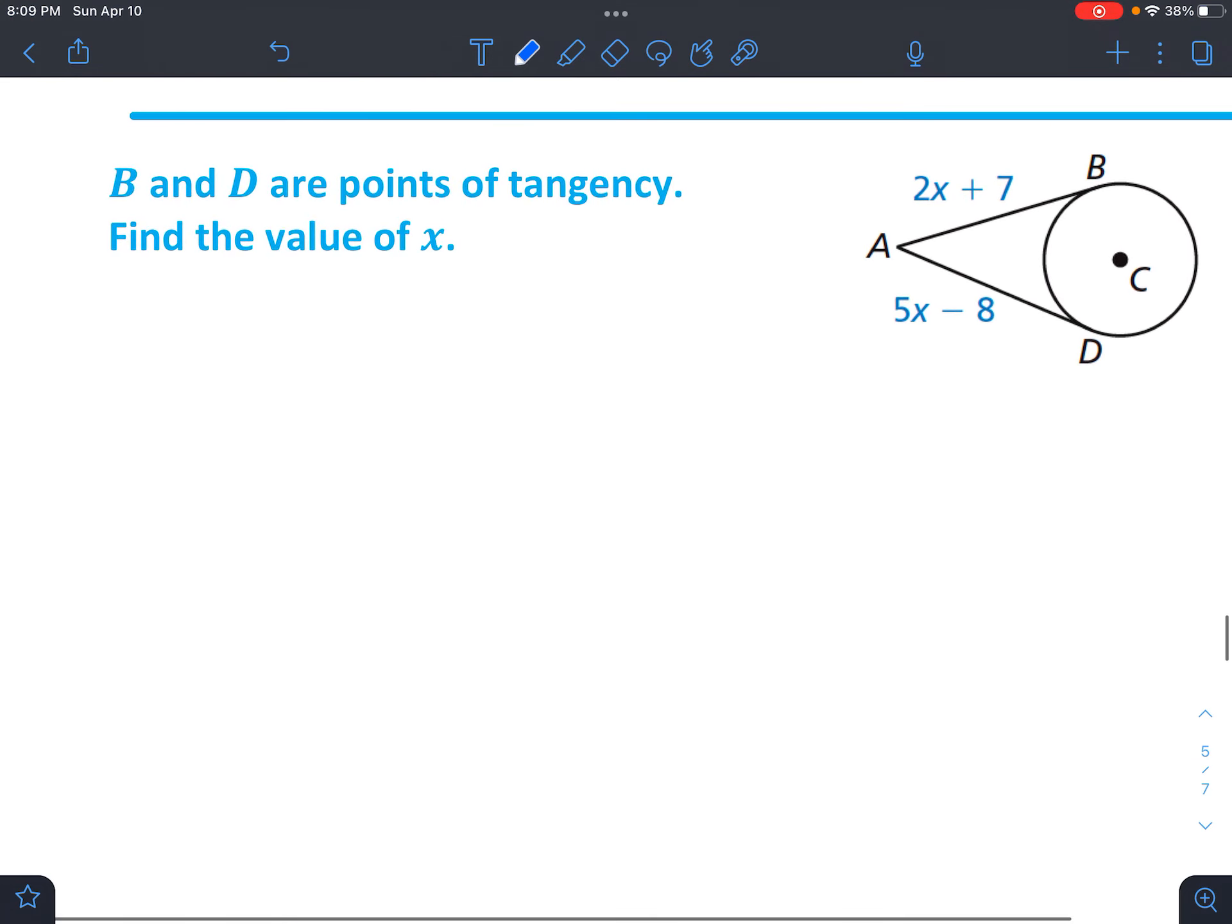Okay, now we're going to use our last theorem, the one that says B and D are points of tangency. So right here, and they both go to a common point, which means that these two sides equal each other, or these two tangent segments. So we're going to set these equal to each other in order to find X.